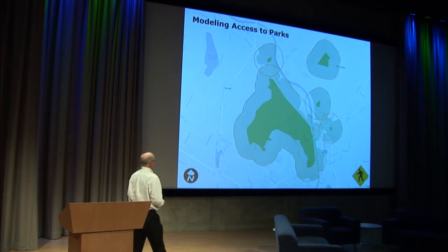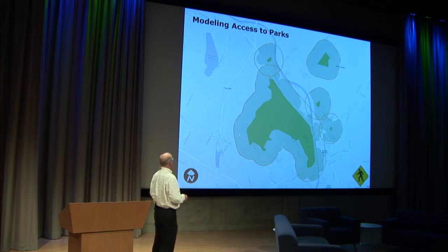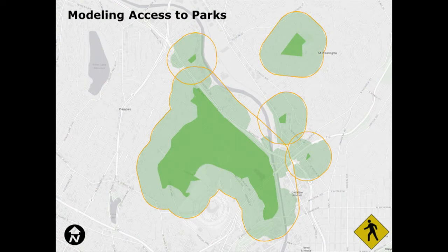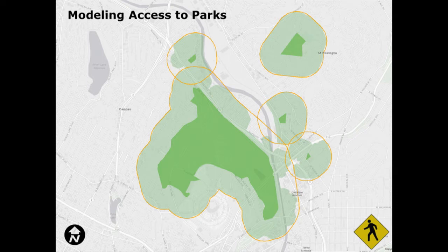In this example, the dark green is the park, the light green is a pedestrian shed modeled on a surface, and the orange is an example of a buffer with the same distance as the pedestrian shed. You can see where connectivity goes through, we get access to the people, and in other places we allowed straight-line distance.